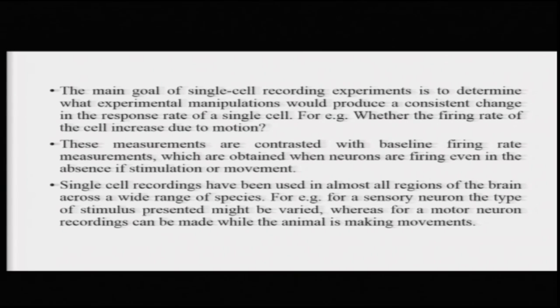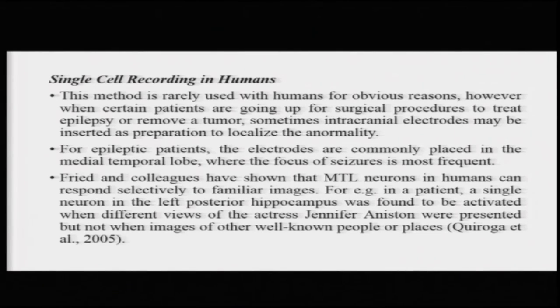These measurements are contrasted with the baseline firing rate measurements where there is no stimulus, and the baseline firing rate of the neuron is measured. Single cell recordings have been used to determine the behavior of neurons in almost all regions of the brain and across a wide range of non-human species. For a sensory neuron, the type of stimulus might be varied, whereas for a motor neuron, recordings can be made when the animal is viewing motion or making motion itself. We can also talk a little about single cell recordings in humans.